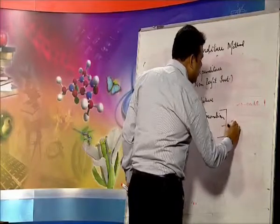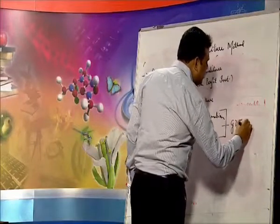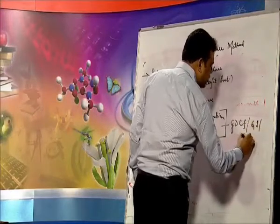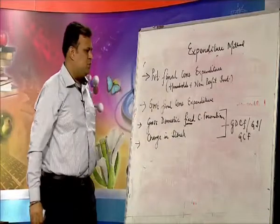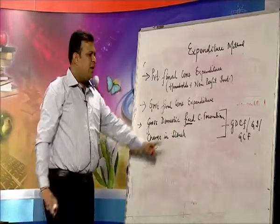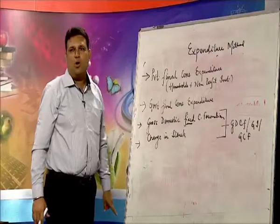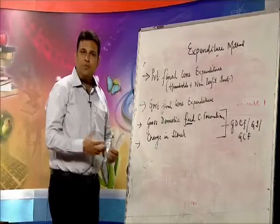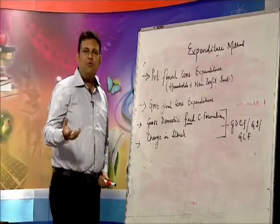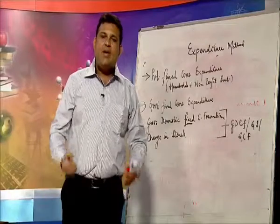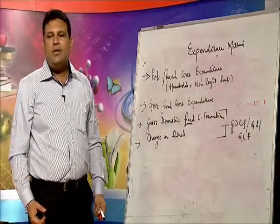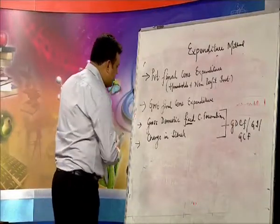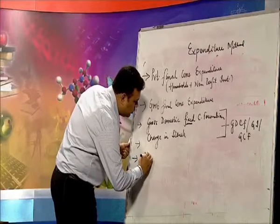Both gross domestic fixed capital formation and change in stock together give you gross domestic capital formation — also called gross investment or gross capital formation. Do not get confused. If 'fixed' is given, you take change in stock separately. If there is no 'fixed,' it is inclusive of change in stock — which includes raw material, semi-finished goods, and livestock.